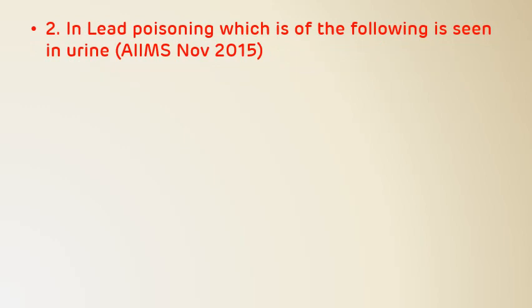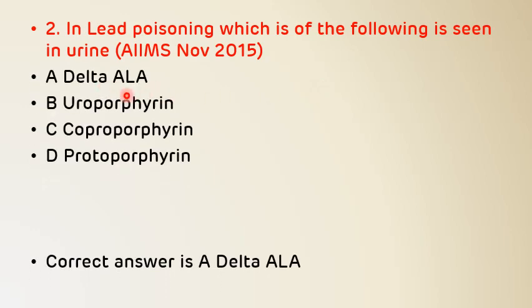The second multiple choice question, also from AIIMS November 2015: 'In lead poisoning, which of the following is seen in urine?' The options are delta-aminolevulinic acid, uroporphyrin, coproporphyrin, and protoporphyrin. As seen in the pathway, lead inhibits the enzyme ALA dehydratase, so ALA accumulates and is excreted in urine. The correct answer is A — delta-aminolevulinic acid.